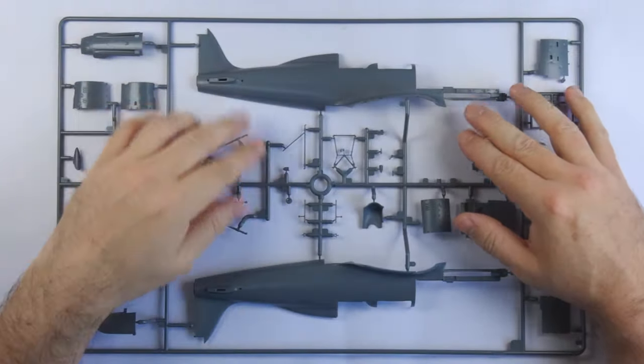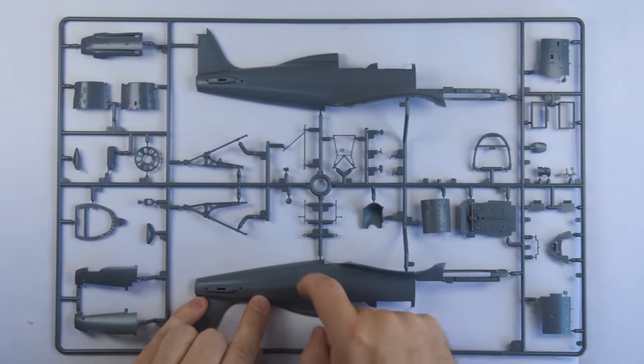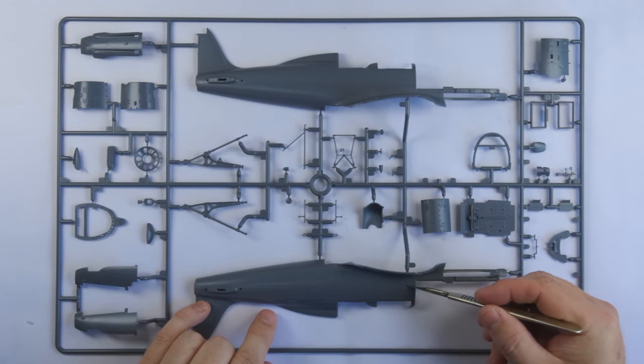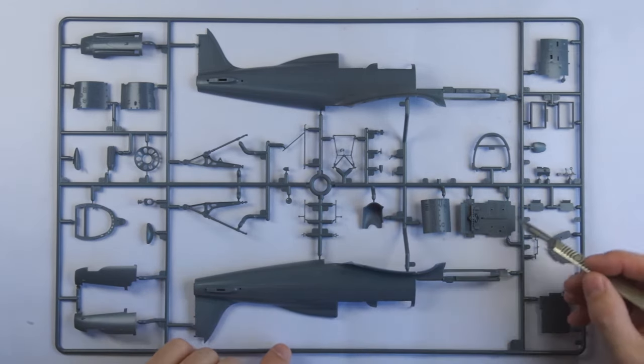Looking at the sprue frames cast in dark grey plastic, you can immediately see the finesse Italeri have managed here. Super thin panel lines, engraved and raised detail, as well as some very finely cast pieces.